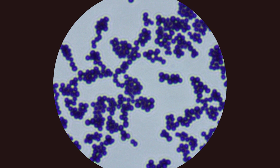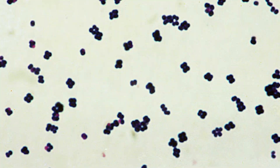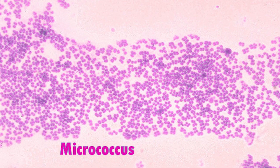Staphylococcus aureus is gram positive, round or oval in shape, varying from 0.5 to 1.5 microns. They are arranged in clusters like a bunch of grapes. During cell division, they divide along both longitudinal and horizontal planes, forming pairs, tetrads, and ultimately irregular clusters. The similar-looking organism is Micrococcus — also gram positive, round, and 0.5 to 3 microns in size. They are slightly bigger than Staphylococcus and are arranged in pairs or mostly tetrads, though they can also appear as clusters in heavy smears.